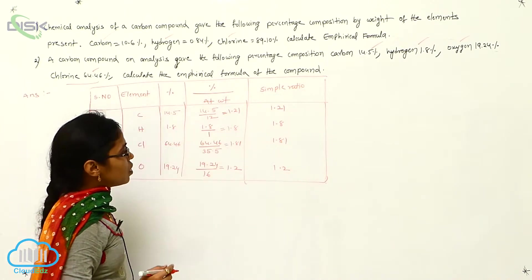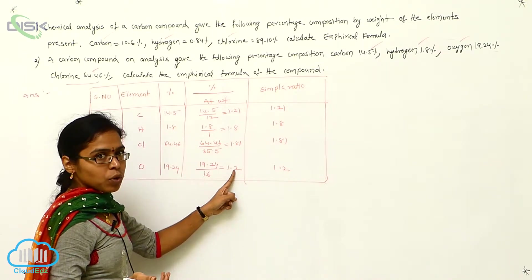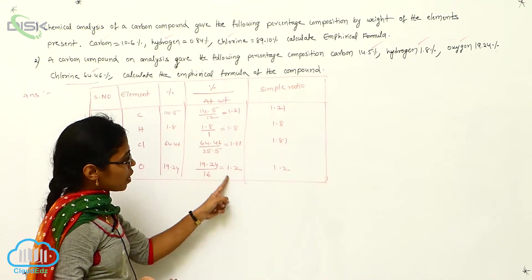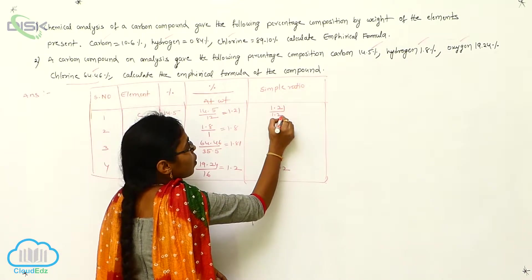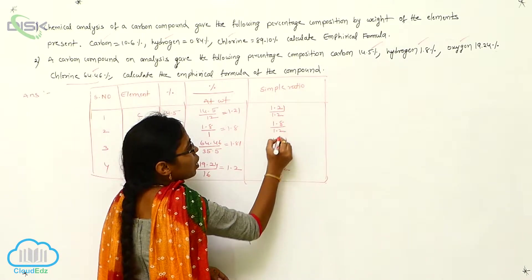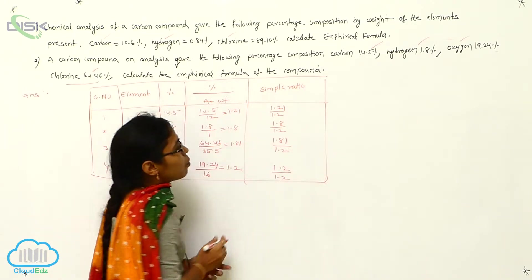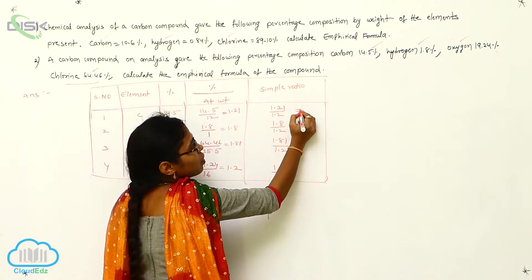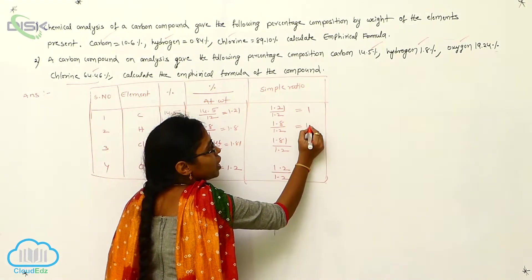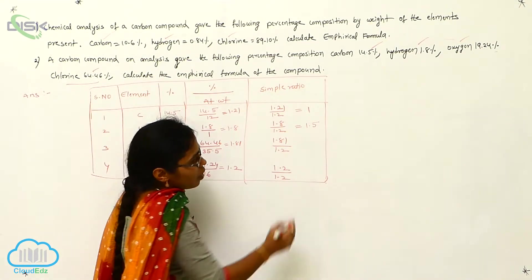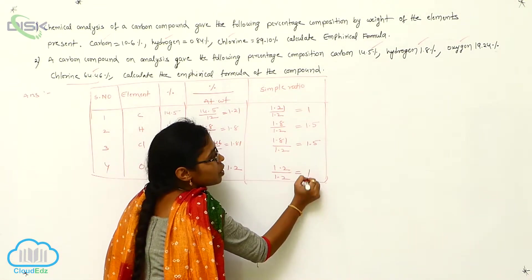Now, which is the least value? It is 1.2. So I am taking 1.2 as the least value and dividing all values by 1.2. From this, Carbon gives nearly 1, Hydrogen gives nearly 1.5, Chlorine gives 1.5, and Oxygen gives 1.